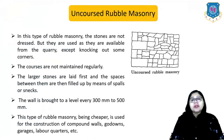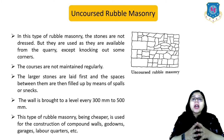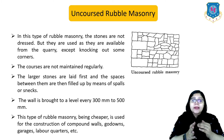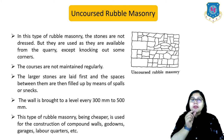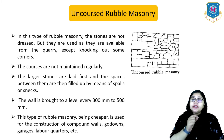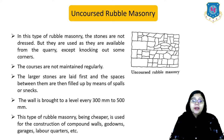In uncoursed rubble masonry, the stones are not dressed but are used as they are available from the quarry, except for knocking out some corners. Courses are not maintained regularly. Large stones are laid first and the spaces between them are then filled up with spells or snacks — meaning small pieces. The wall is brought to a level every 300 to 500 mm. This type is cheaper and is used for compound walls, godowns, garages and labour quarters.